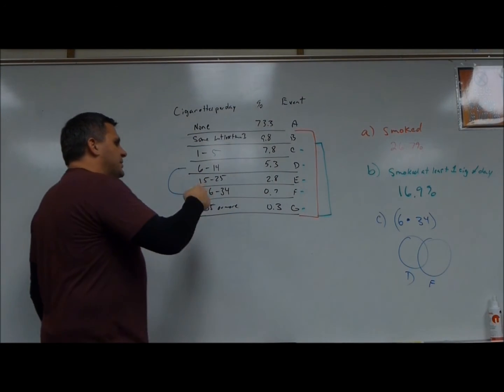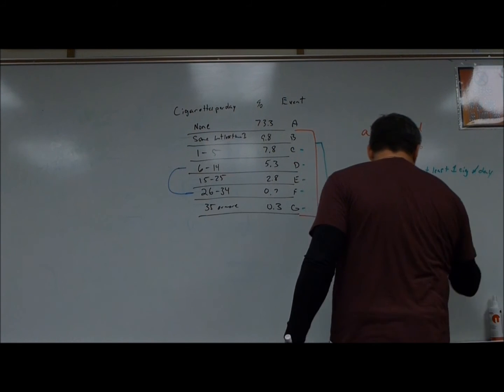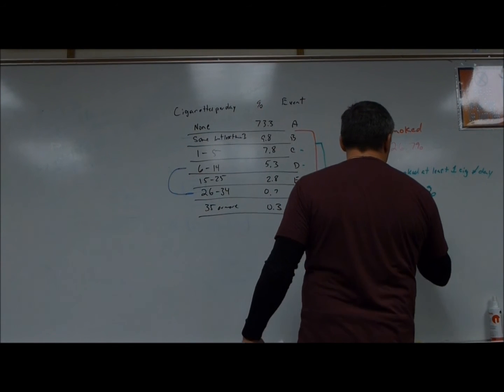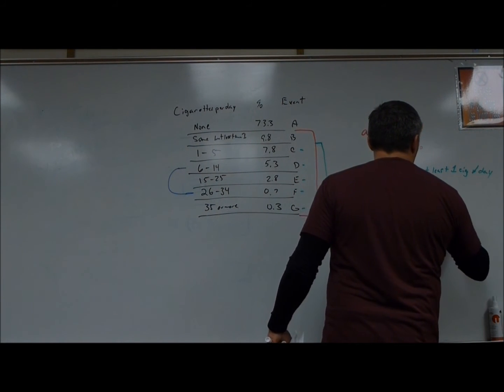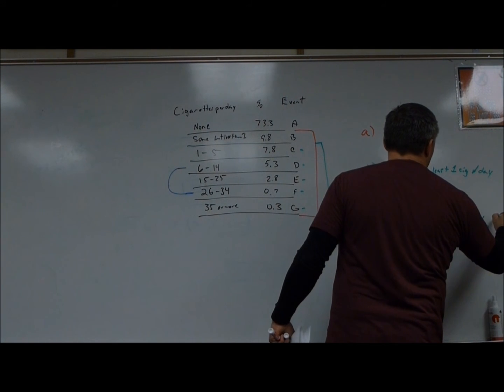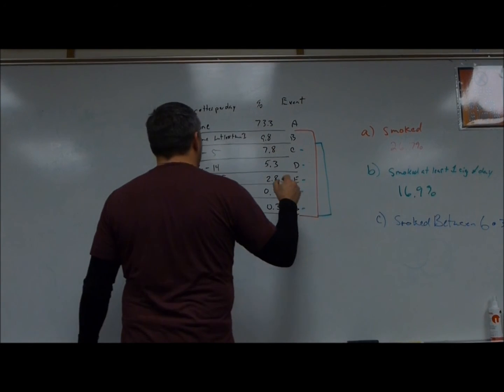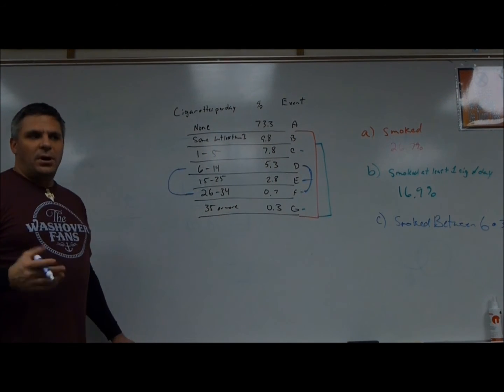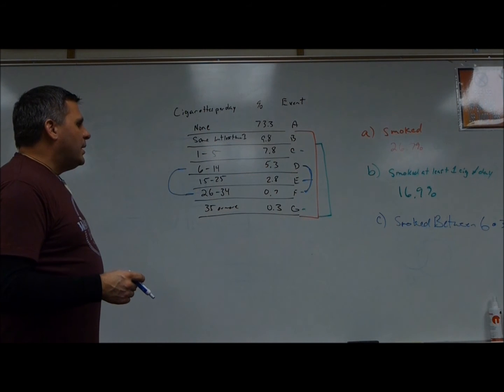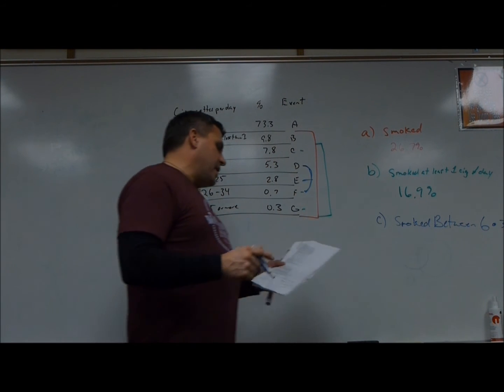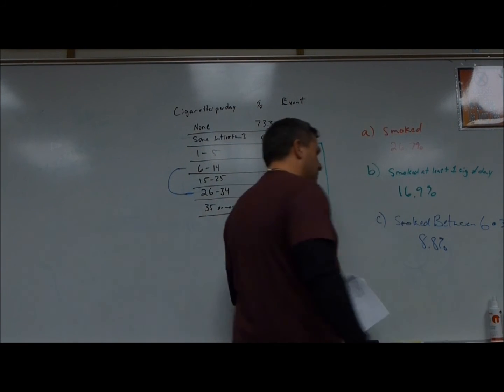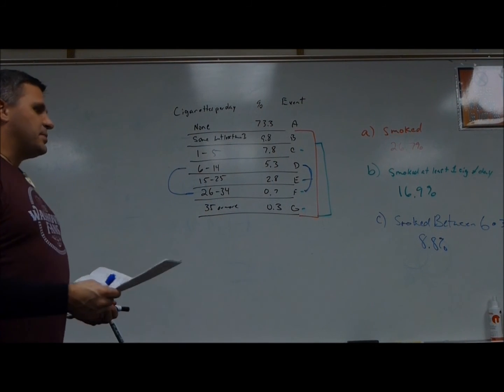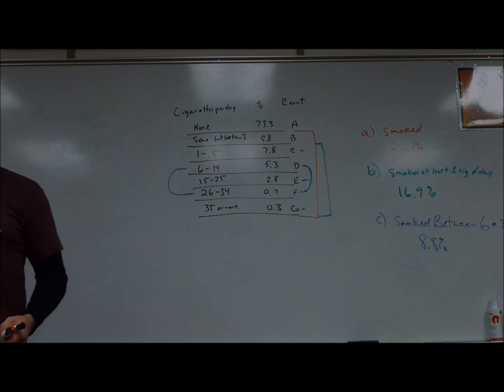So between 6 and 34 just means like we did before. Between D and F. So D, E, and F all are included. So I would add those three up and get 8.8 percent chance of picking one of them.